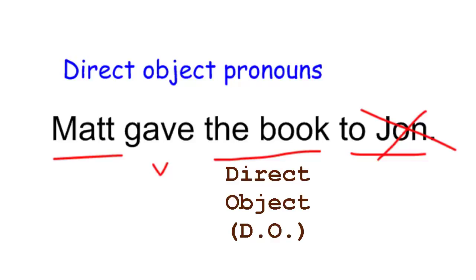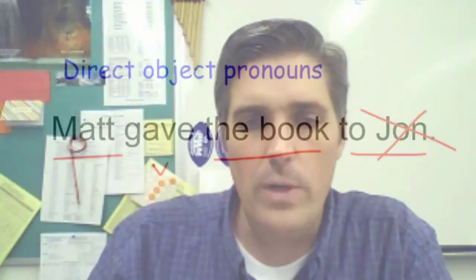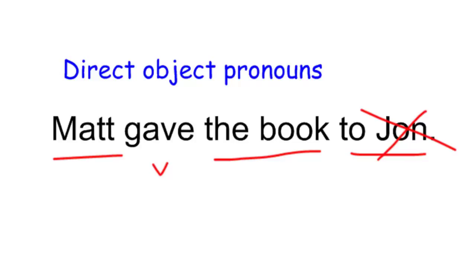At this stage, the book is still just a noun. So we ask ourselves: what's a pronoun, how do we make it a direct object pronoun? You'll remember from English class that pronouns replace nouns. So what would we replace 'the book' with? Probably 'it' — Matt gave it to John.